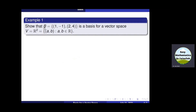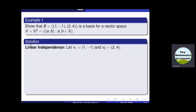In this example, we have a set B with two elements. We will show that this set B is a basis for the vector space R². We shall satisfy two properties. The first is that the elements of B are linearly independent. Let us represent the first element by V1 and the second by V2, and now we put the linear combination of these elements equal to zero, then use the values of V1 and V2 in this equation.